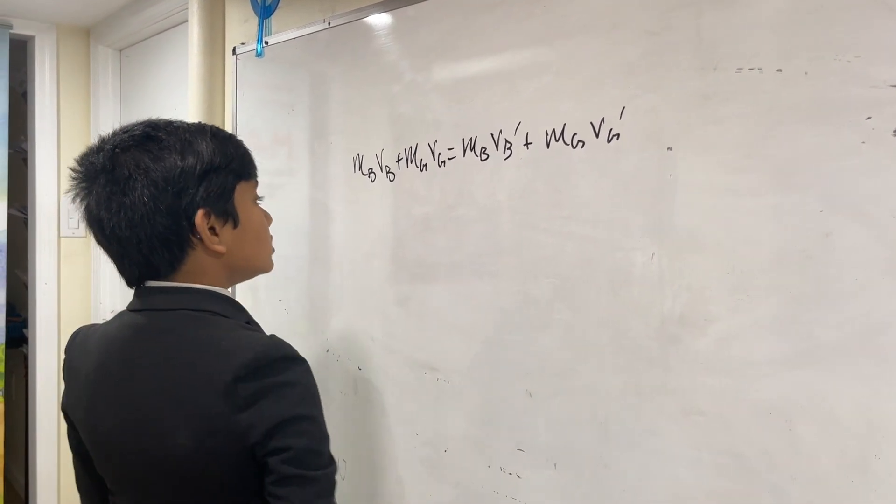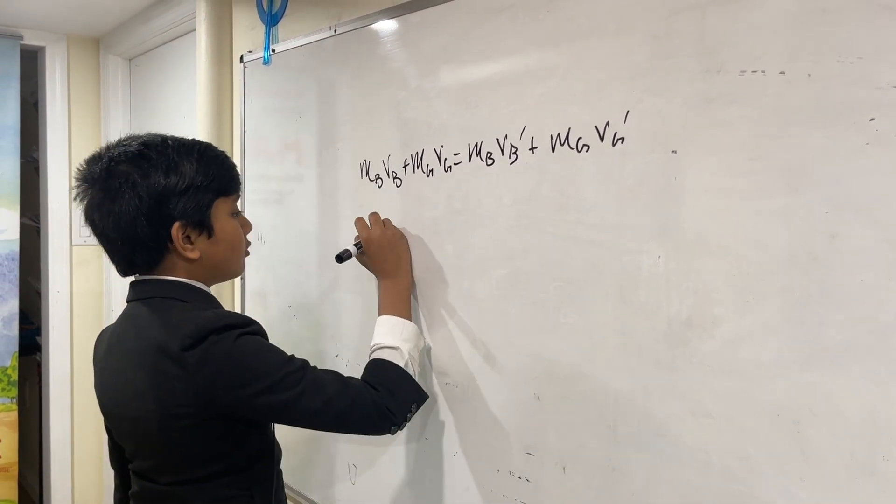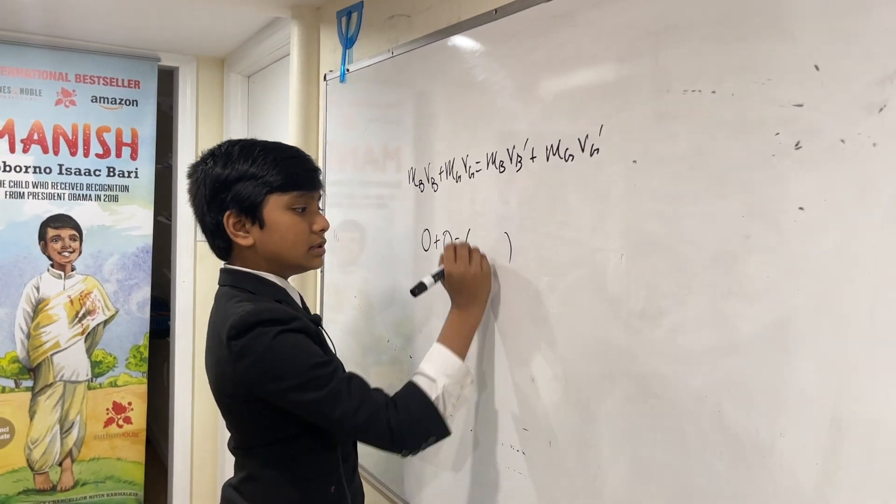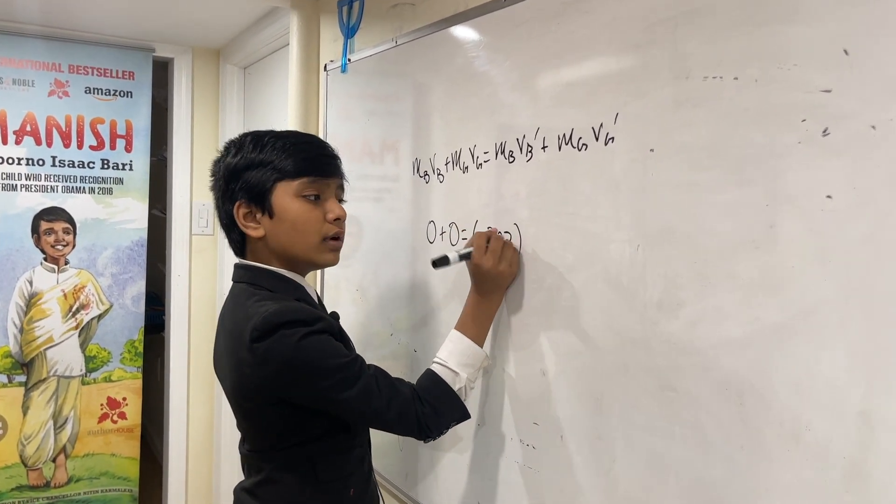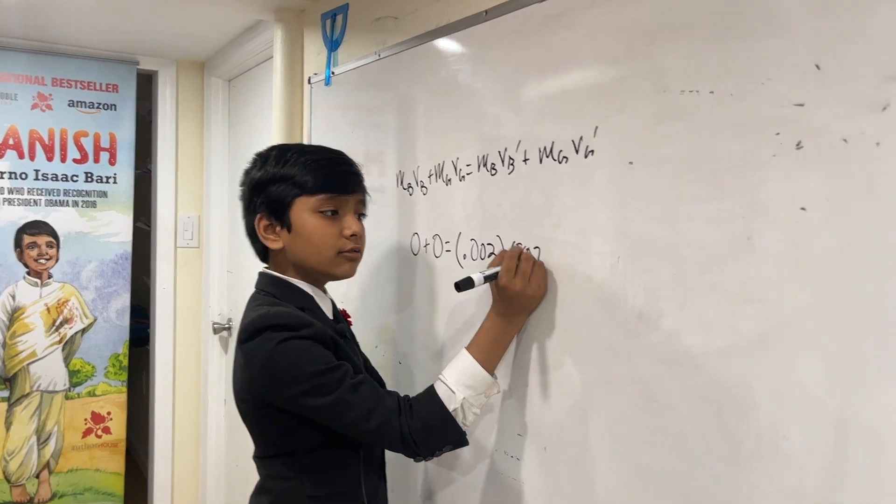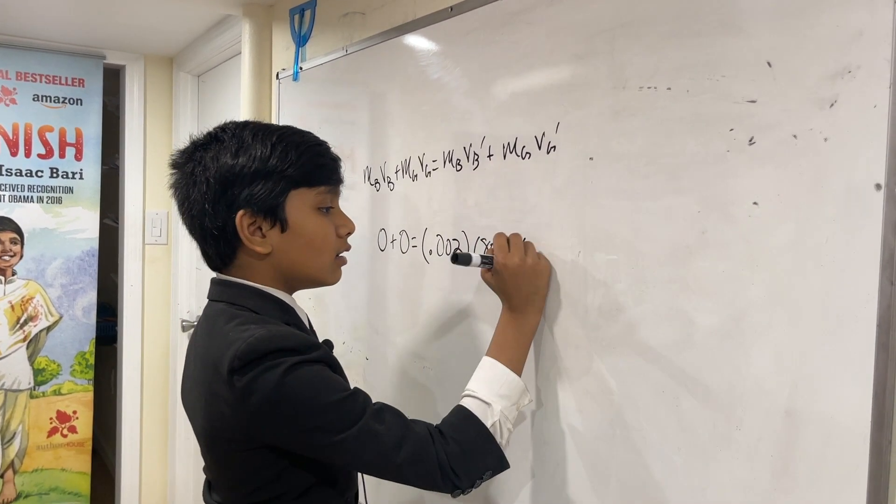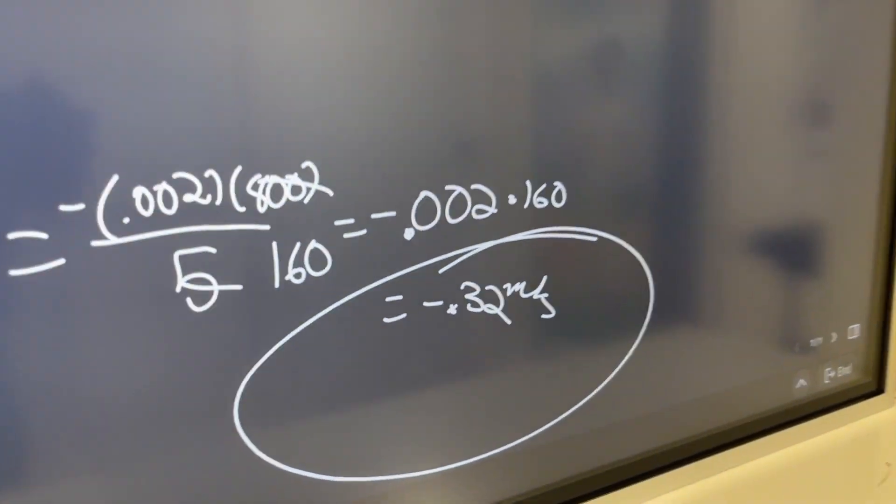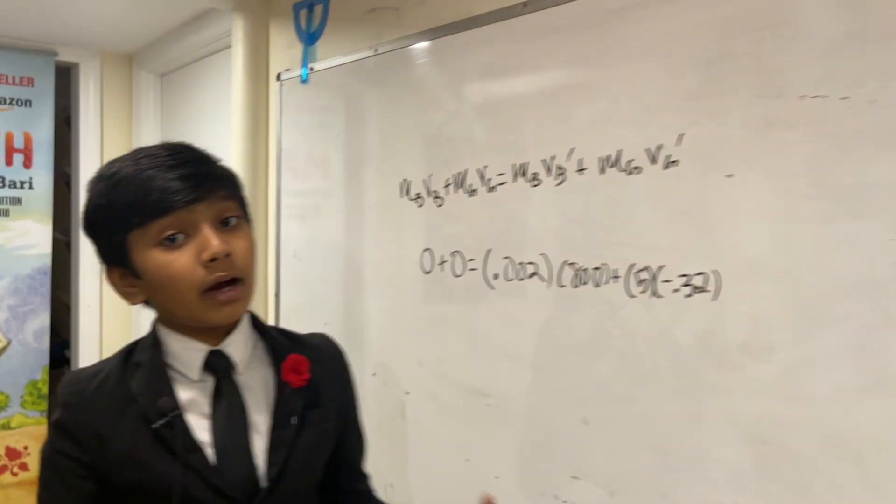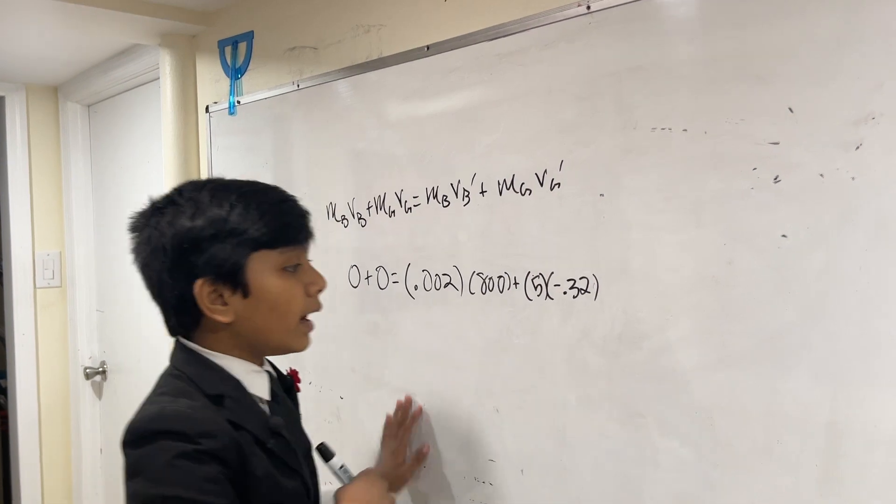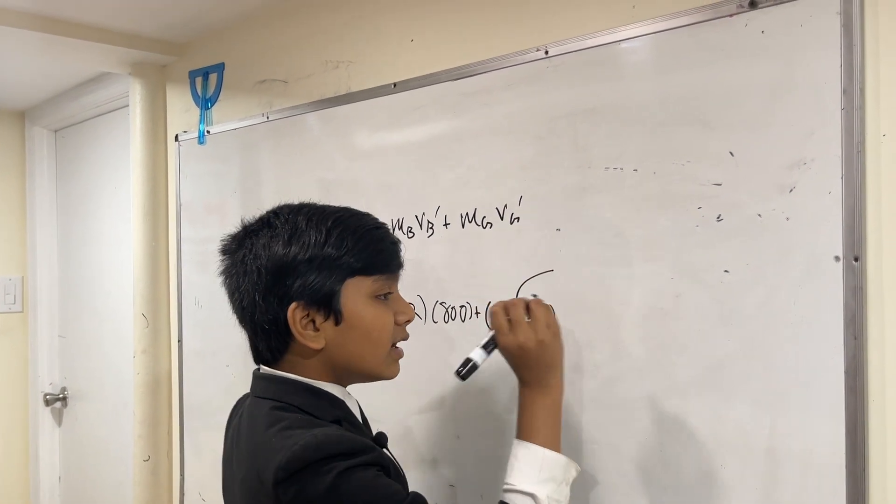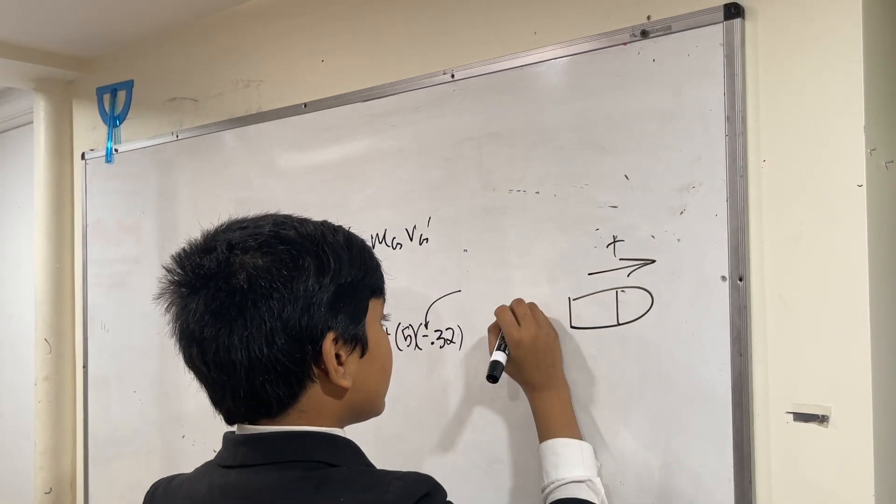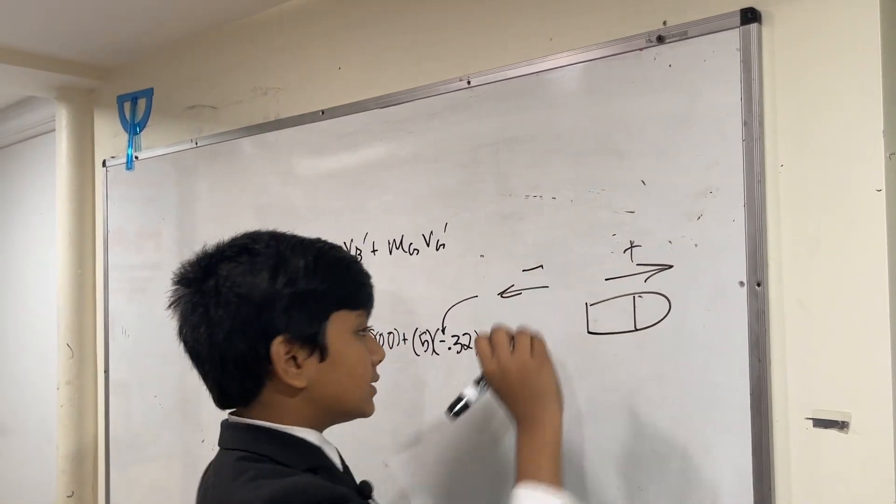Okay. So now, we have 0 plus 0 over here is equal to MB which would be 0.002, VB prime which is 800, plus MG which is 5 and VG which is minus 0.32. And you might be asking, why minus 0.32? Why the minus? Well, that's because since we define the bullet as going in the positive direction, the gun must recoil in the opposite direction which is negative.